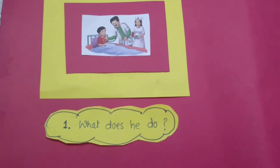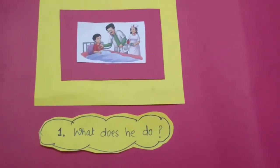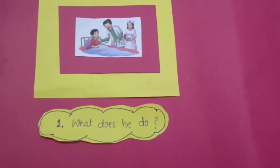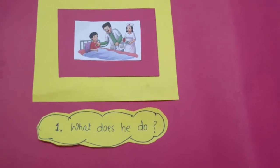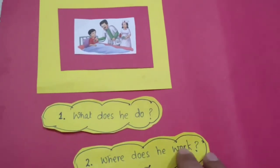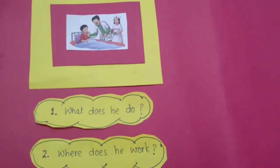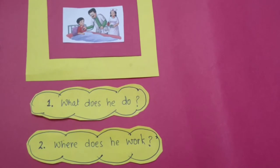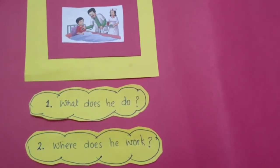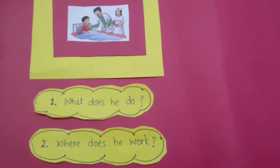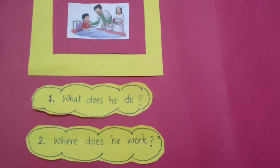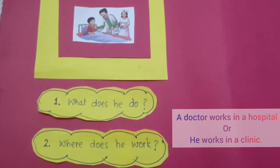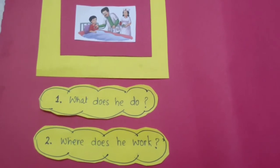Can anybody tell me what does a doctor do? A doctor treats sick people. Now let's talk about the second question. Everybody can write the answer to this question. The second question is: where does he work? Whenever you think about the picture, you have to think the second question should be, where does he work? Can you tell me where does a doctor work? A doctor works in a hospital or in a clinic. It's so easy — making two sentences is just a piece of cake.